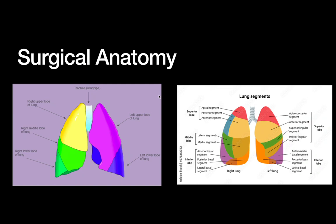Now that we've used PFTs to select preoperative patients, let's briefly review surgical anatomy of the lung. The right lung has three lobes — upper, middle, and lower — while the left lung, which has the heart on that side, only has two lobes: the upper lobe and the lower lobe. The left upper lobe has an extension called the lingula, which is sort of a quasi-middle lobe on the left side.